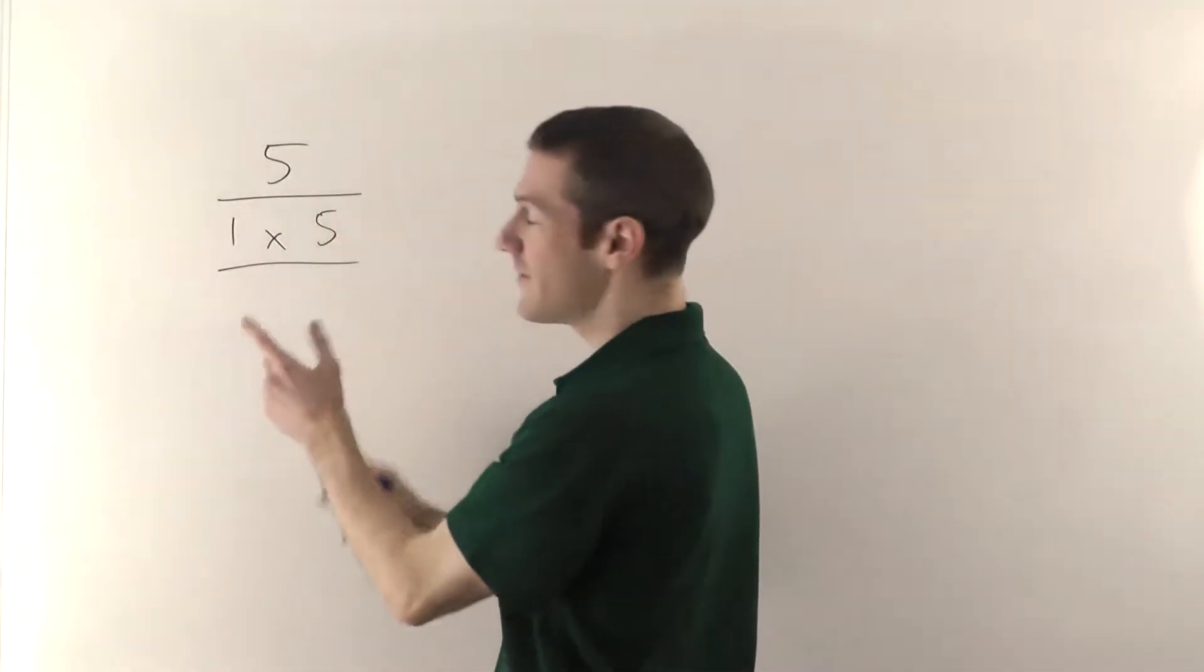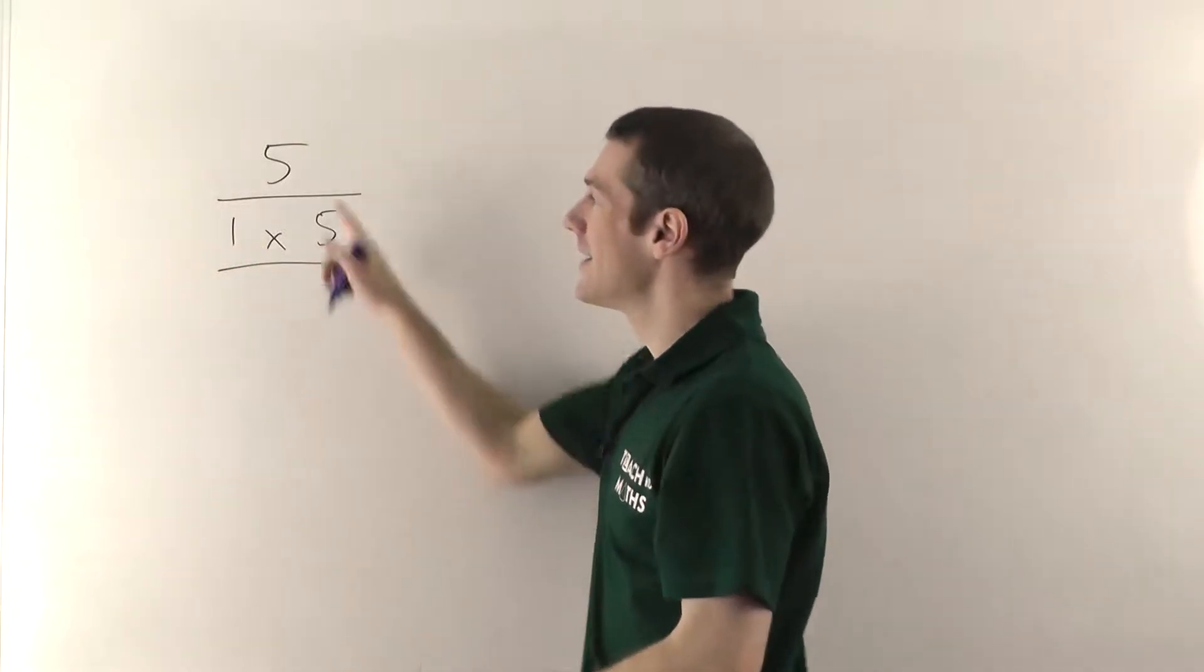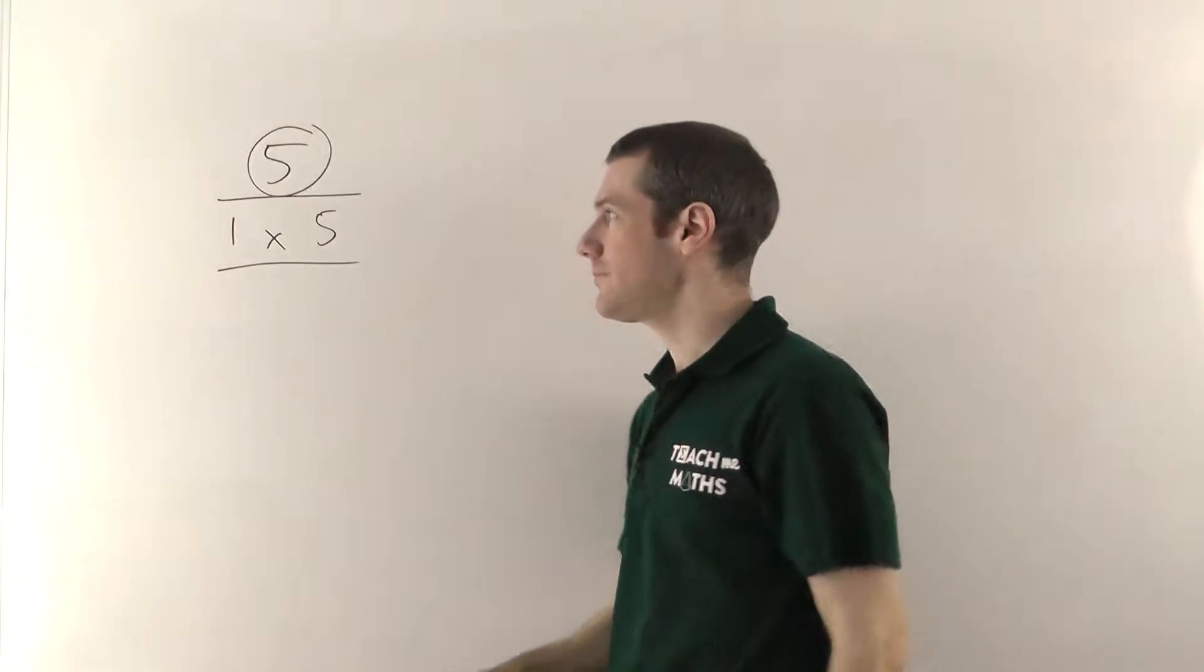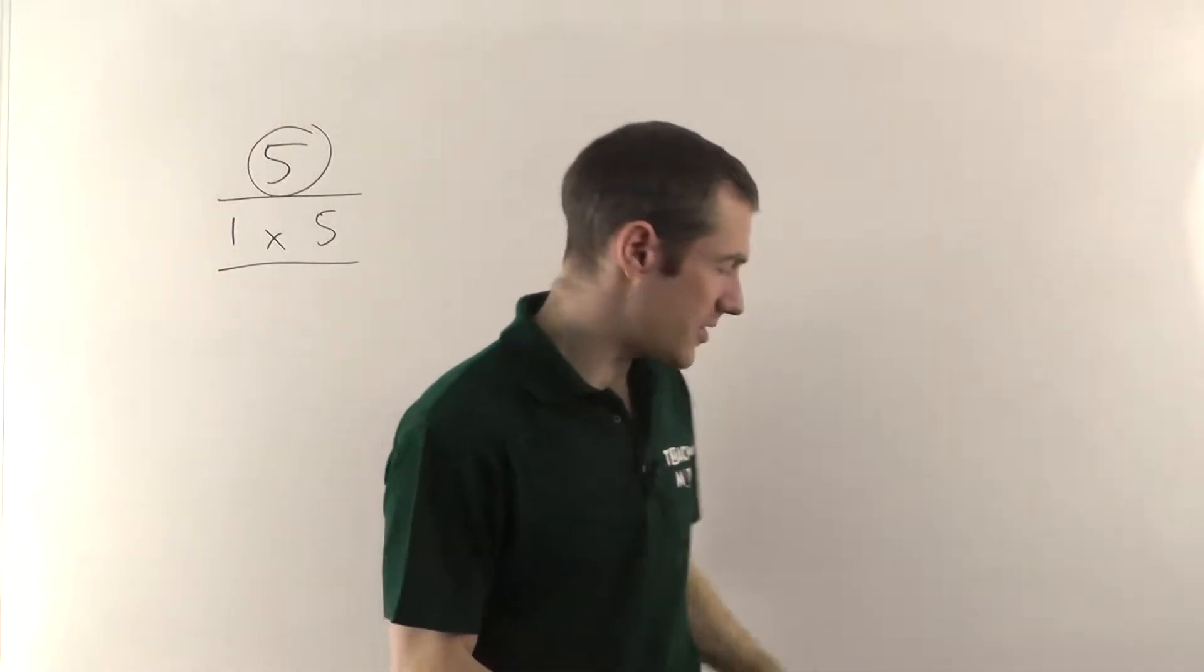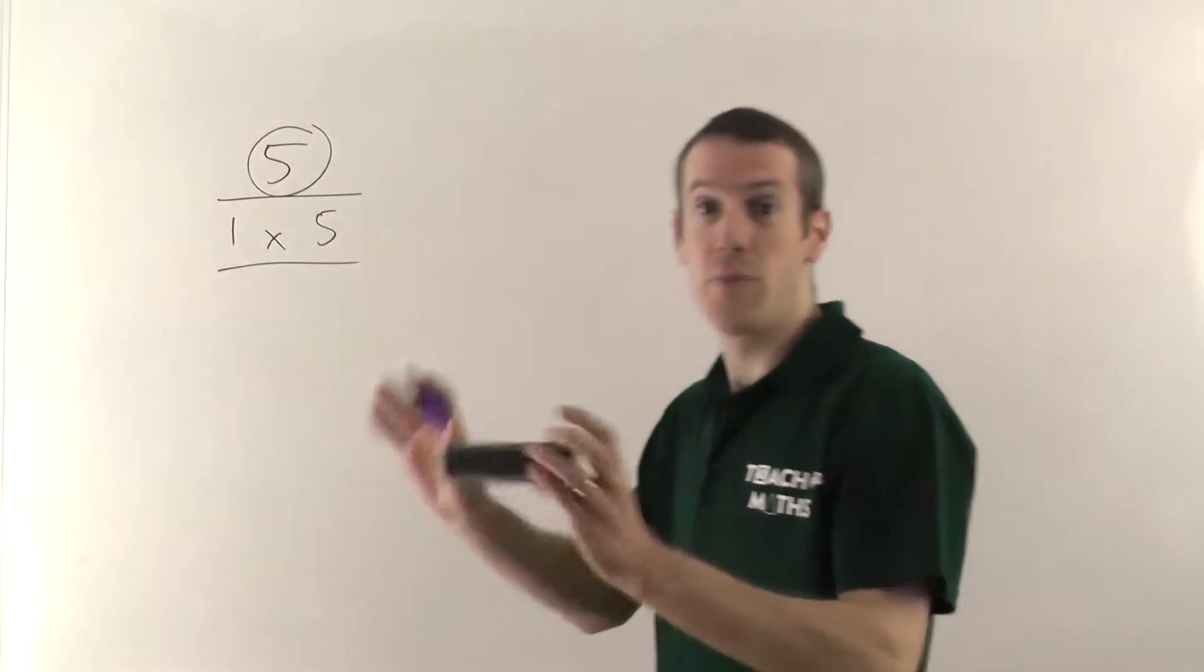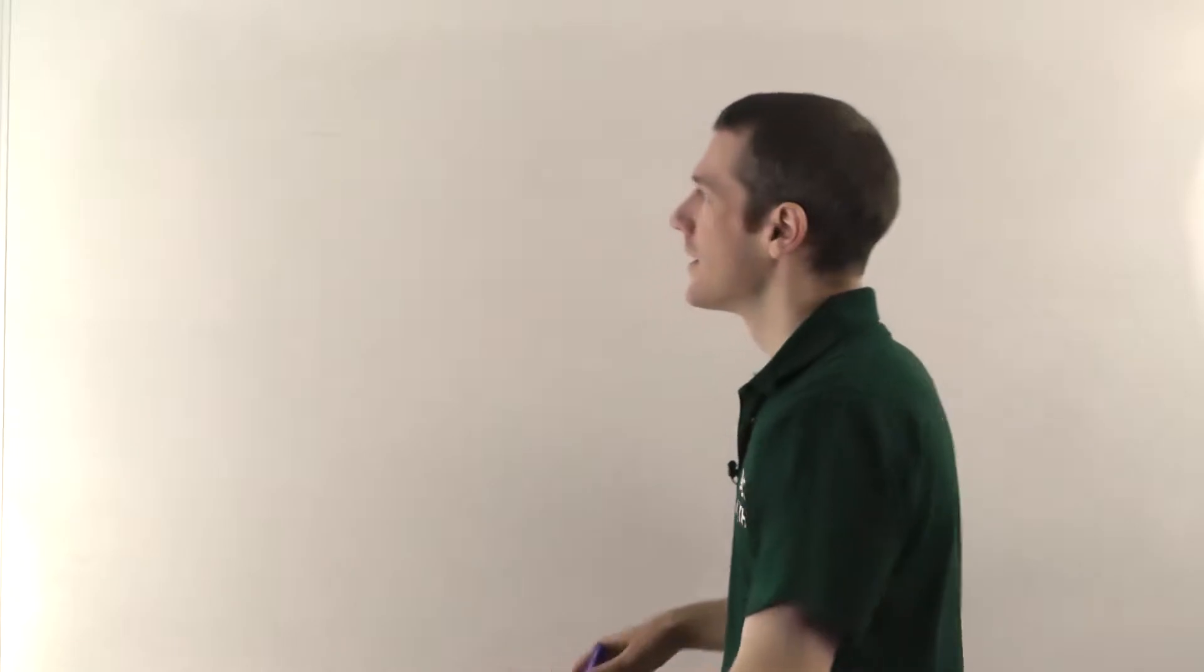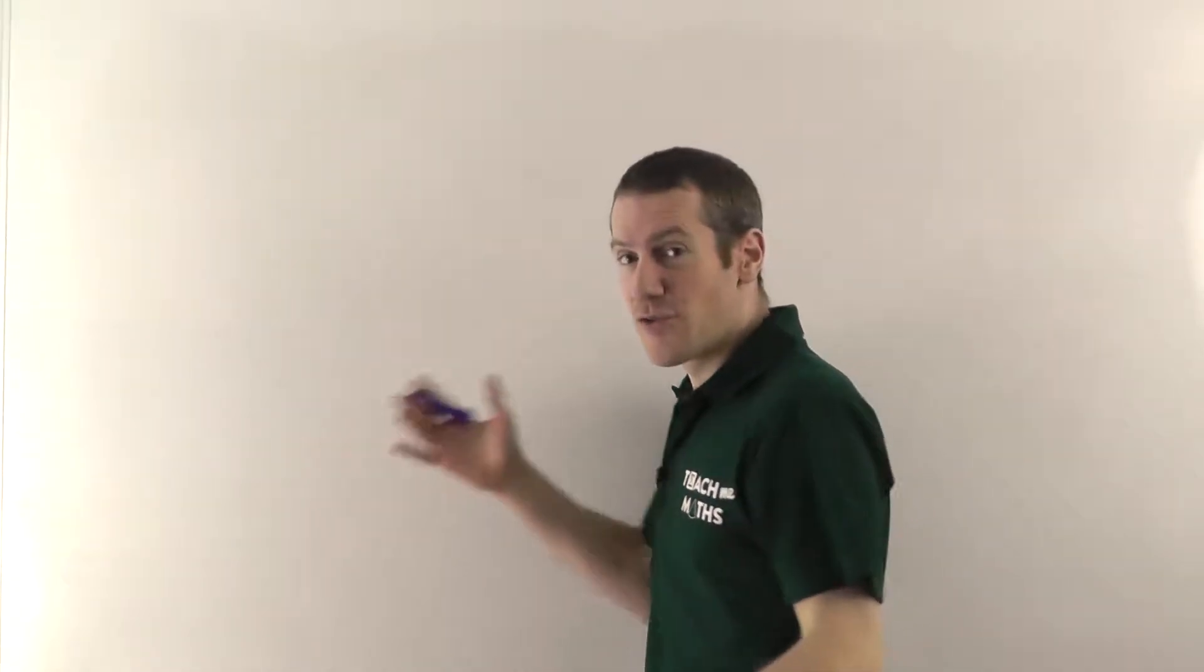And actually that is what makes it prime. So for any number, if the only factors are 1 and the number itself, then 5 is a prime number. So using that method, you can then find out a whole bunch of different prime numbers. So if we start off, we'll just go from 1, 2, 3, 4 and we'll see how many prime numbers we can find.